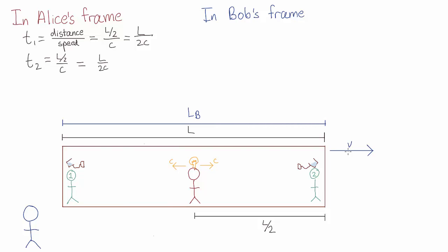Now this might not turn out to be the case. Maybe lb is equal to l, but I'll just keep this general for now. And in which case, the space between Alice and one of Bob's friends is lb over 2.